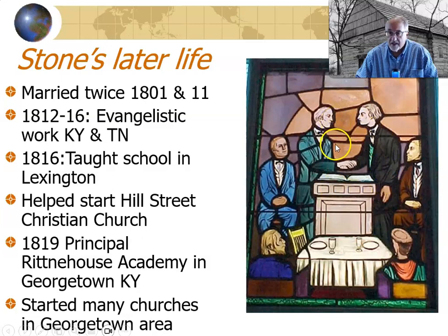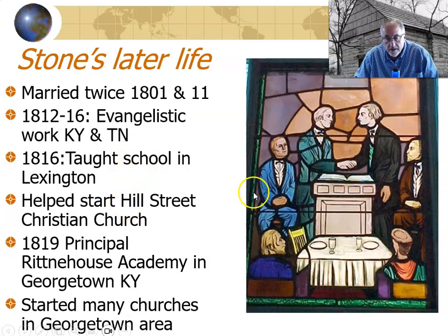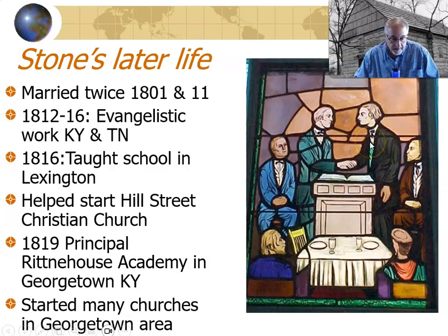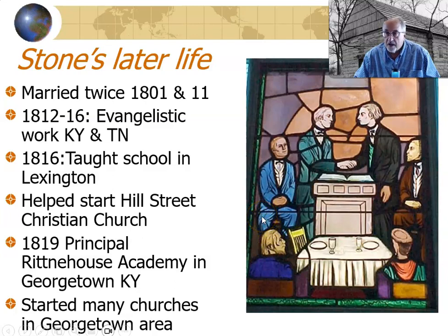Here is another stained glass window showing Barton W. Stone and Raccoon John Smith shaking hands at the Hill Street Christian Church in 1832, signifying the joining and merging of the Stone and Campbell movements. Raccoon John Smith will represent the Campbell side and Barton W. Stone the Stone side. The unification takes hold and within a few years it's hard to tell the difference — it's a very successful merging of the two groups into one.